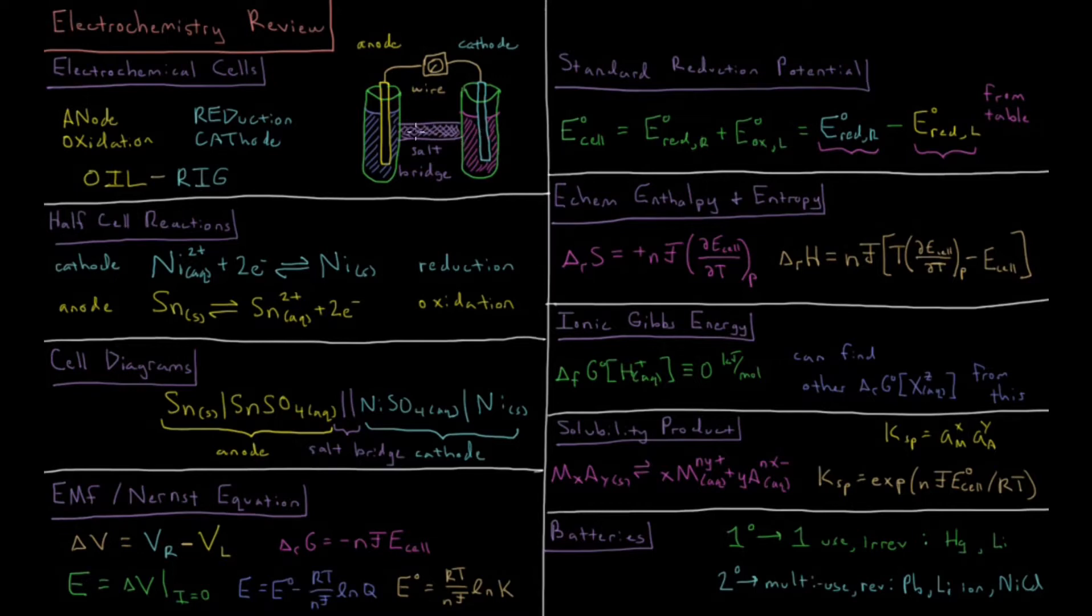Some ions flow through the salt bridge to complete the circuit, and we can have energy and electrons flow through this circuit as long as our anode and cathode will function.